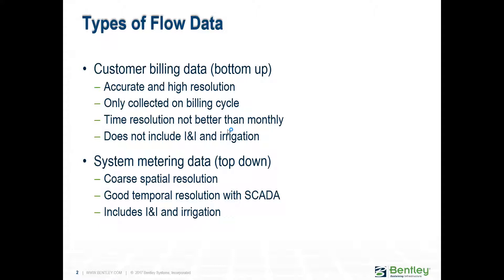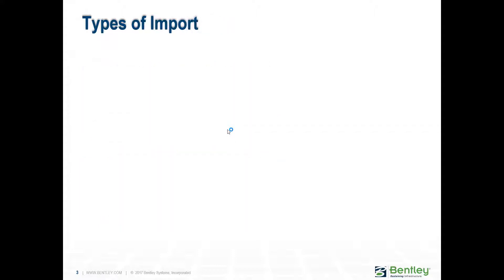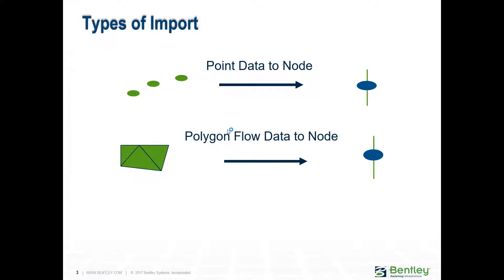The challenge with the top-down approach is deciding how much to allocate to one user versus another. You can use one or both approaches, or a combination — which is what people typically end up doing. They use granular billing data for most nodes, ensure what comes out equals what enters the treatment plant, and any difference is attributed to I&I, which is then distributed throughout the network.